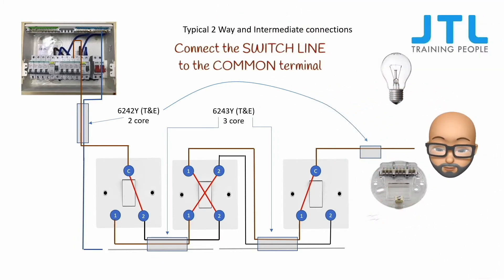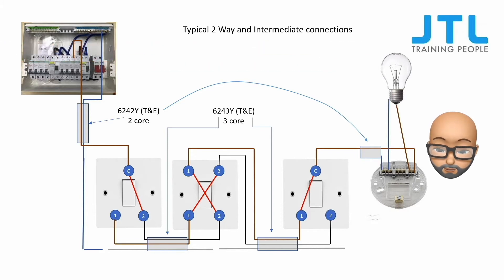Finally, connect the switch line from the light to the common on the last switch and the neutral return.